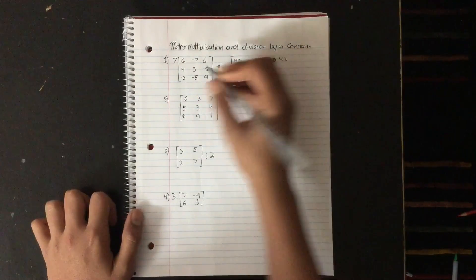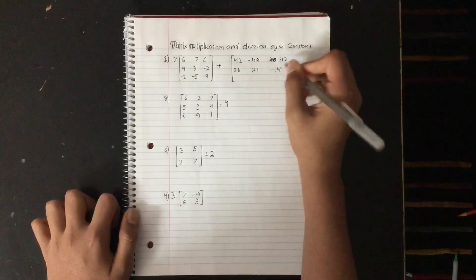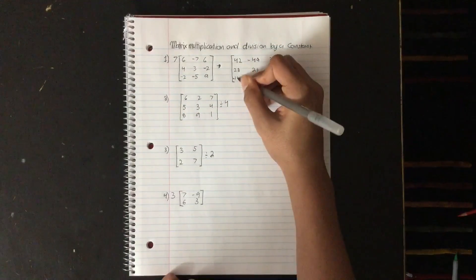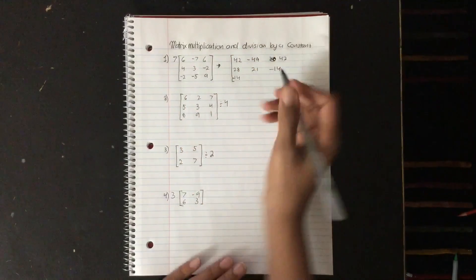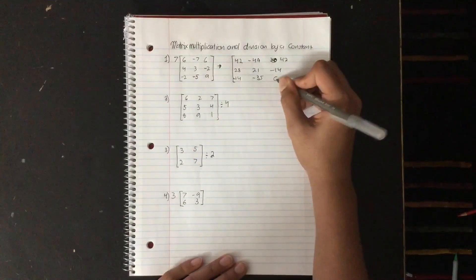7 times 3 is 21, 7 times negative 2 is negative 14. 7 times negative 2 is negative 14 again. And 7 times negative 5, negative 35, 7 times 9 is 63.